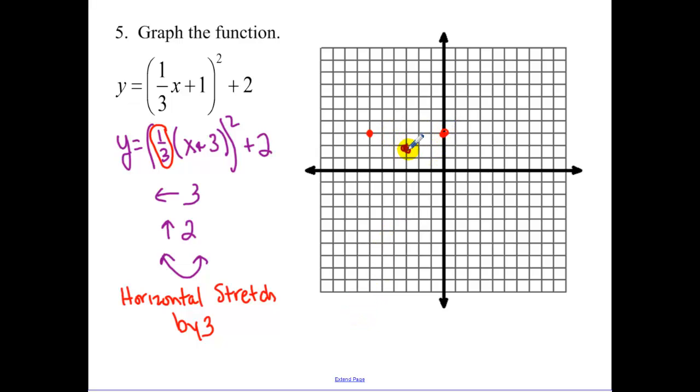And then I would go normally left 2 but up 4. I'm going to go left 6 because I'm stretching that by 3, and up 4. I'm going to go right 6 and up 4. And this is what our quadratic looks like with our horizontal stretches and compressions.